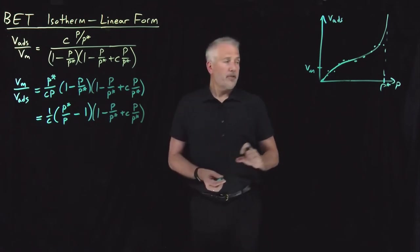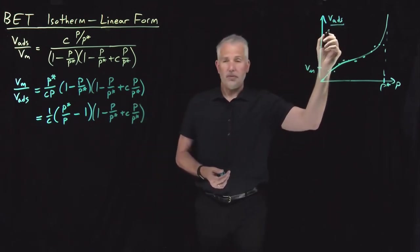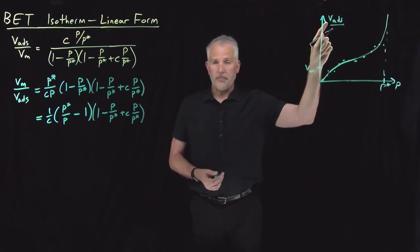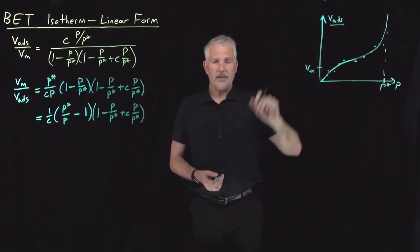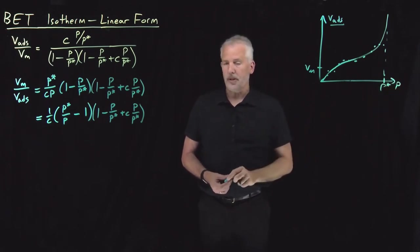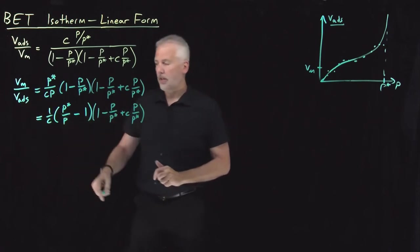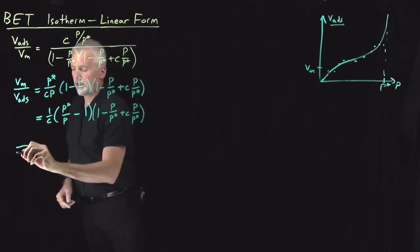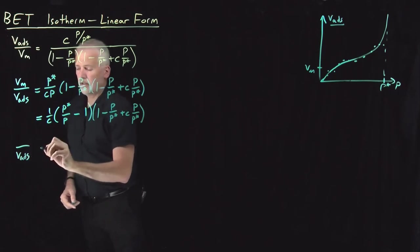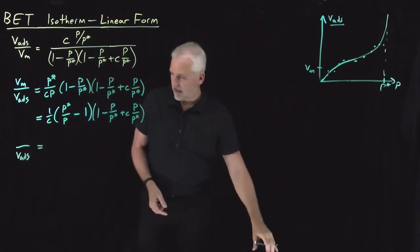All right. So what I'm after is a graph of something, maybe not the volume, but some function of the volume that's going to appear on my y-axis, and maybe not the pressure, but some function of the pressure that's going to appear on the x-axis. So I'm going to leave my adsorbed volume over here on the left, certainly. That's going to be my independent variable. In fact, let me take away that equal sign.